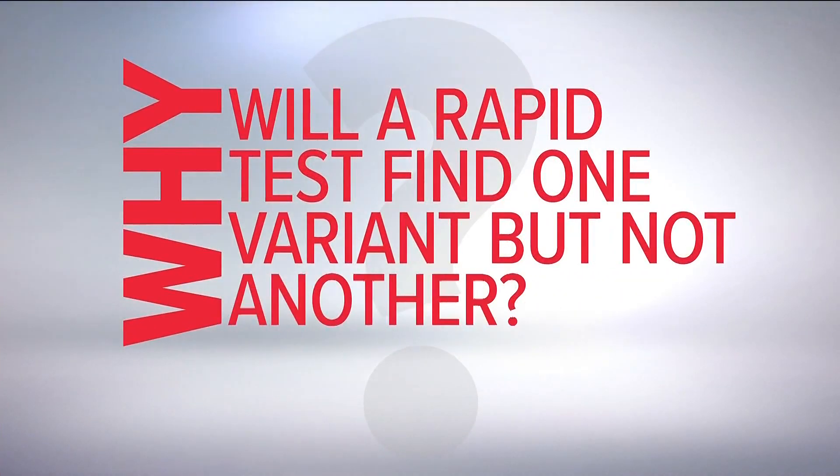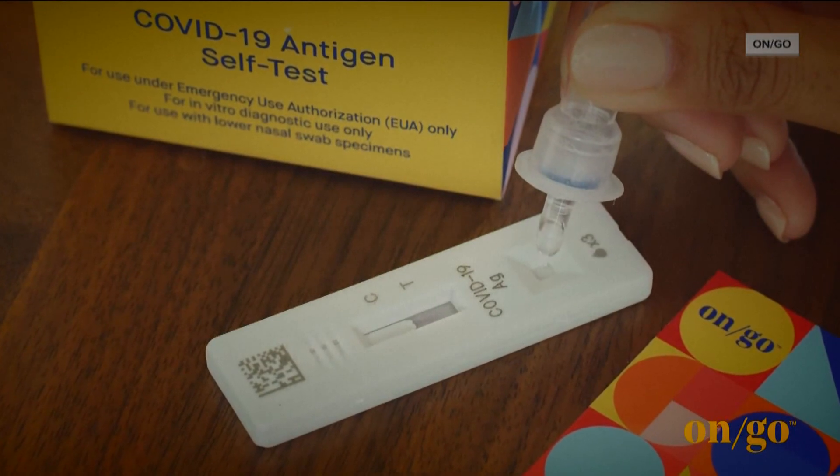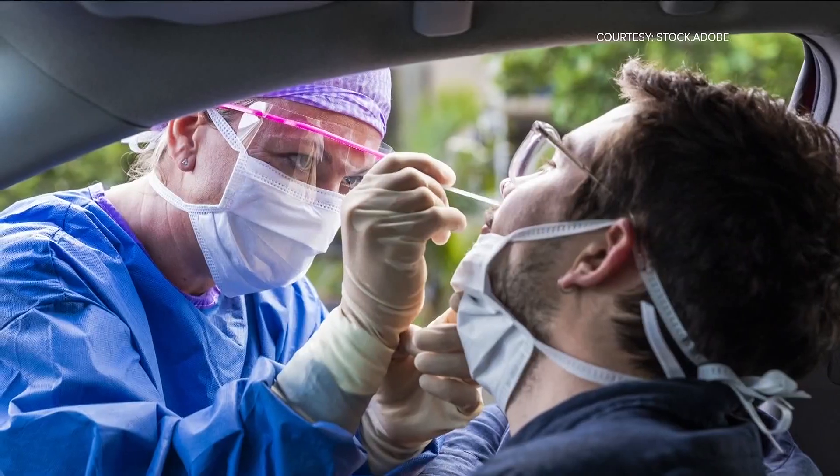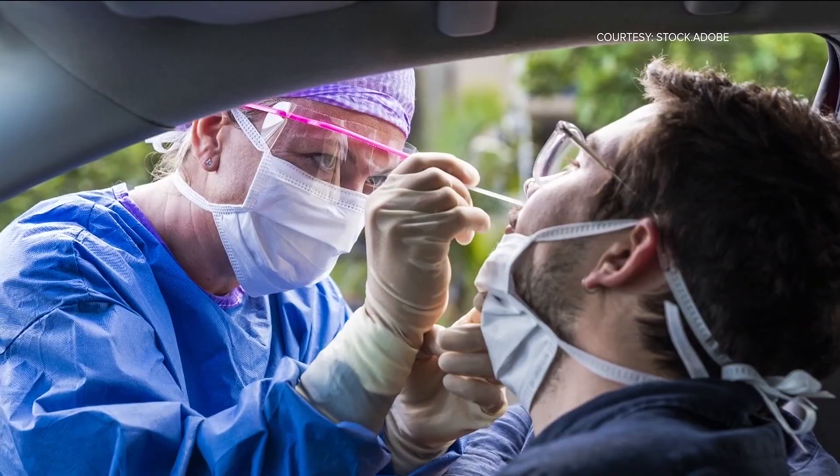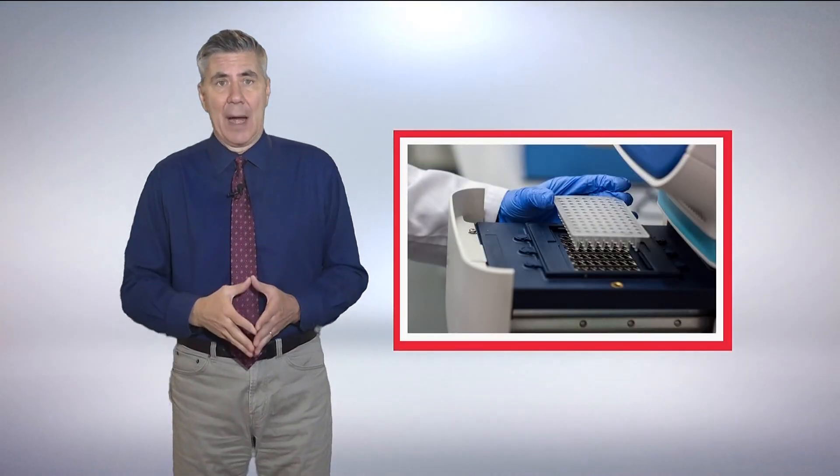Here's why those rapid tests might detect one variant but not another. First, let's look at the difference between rapid tests and the PCR tests that take a deeper dive and a longer wait to get results. Dr. M.G. Finn of Georgia Tech tells us the PCR tests look for genetic material found inside the virus.